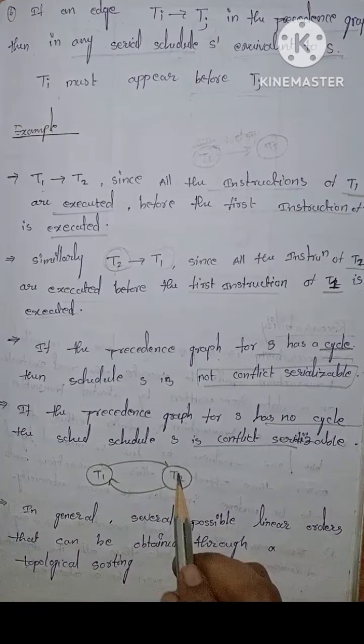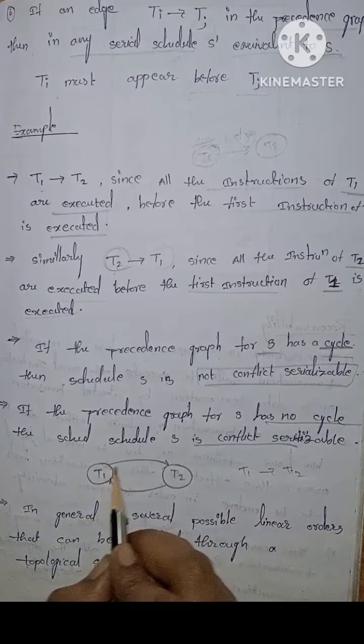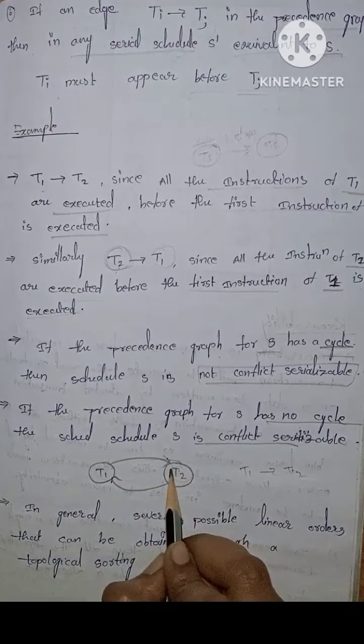The schedule is conflict serializable such that it should be T1, T2, and then T1 gives T2, and then T1 instructions are executed before T2 instructions are executed.